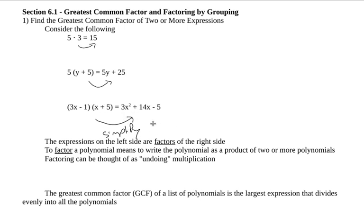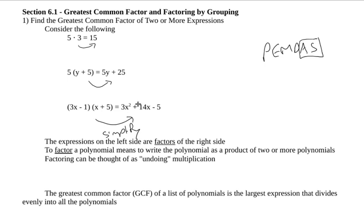Simplifying usually involves doing things like getting rid of parentheses. And ultimately, when you simplify and you're getting rid of all the parentheses, think about the order of operations — the last operations that tend to occur tend to be addition and subtraction, because those are the last part of the order of operations.